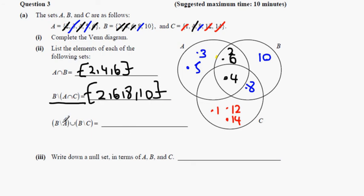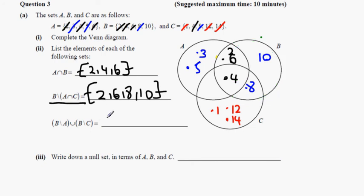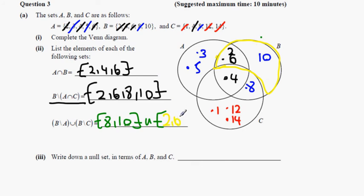Everything in B that's not in A is going to be 8 and 10. Unioned with everything in B that's not in C, which is 2, 6 and 10. The union of those two sets means everything in both sets listed once: 2, 6, 8 and 10.